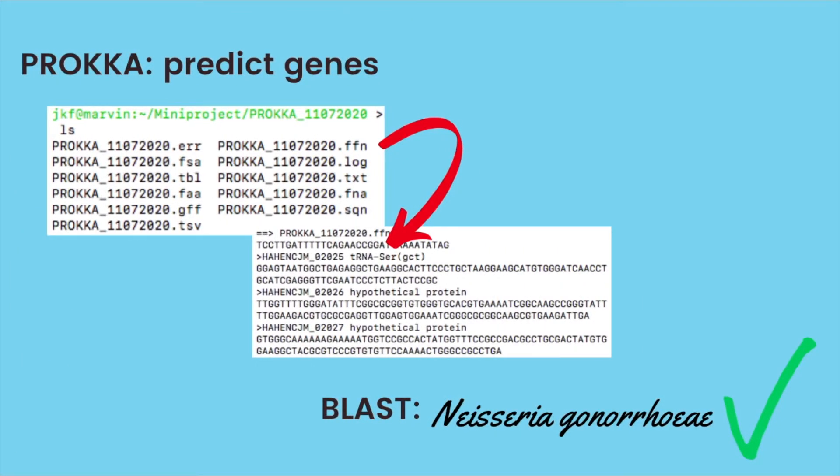Using the assembled genome constructed by Velvet for trimmed reads at k equals 63, the software program predicted the genes. Different formats of the predicted genes were produced, including forms of amino acid sequences and the nucleotide sequences.